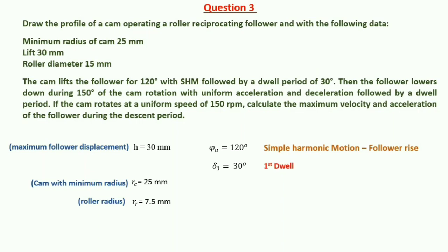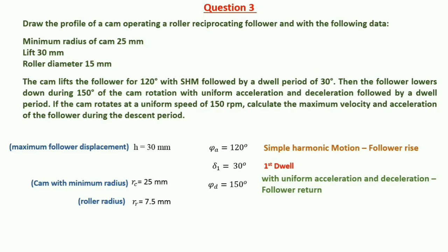The follower rise dwell period delta 1 = 30 degrees. The follower lowers during phi D = 150 degrees of cam rotation with uniform acceleration and deceleration. The return dwell period delta 2 = 60 degrees. The cam speed is 150 RPM.